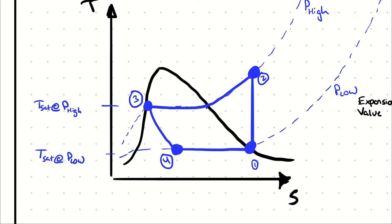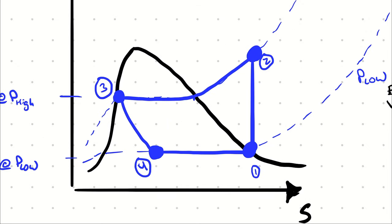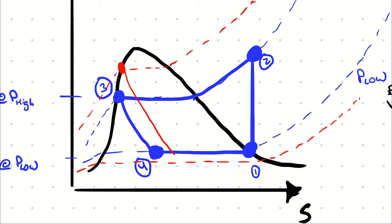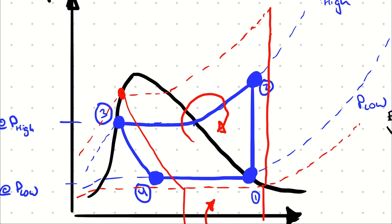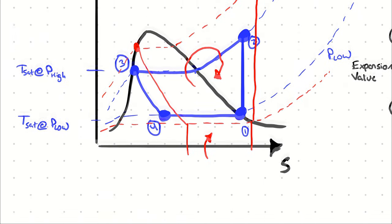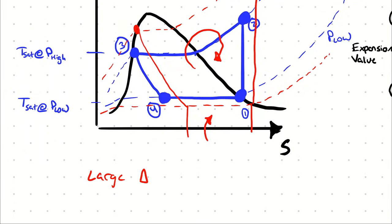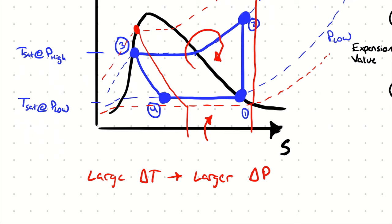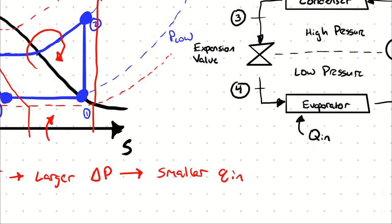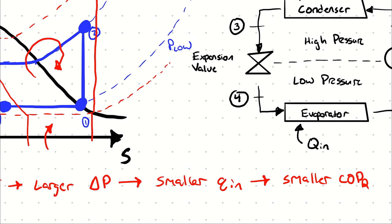Now let's look at how pressure difference affects operating efficiency. If I were to move the low pressure line down and/or move the high pressure line up, in both cases I'm going to be decreasing the difference in horizontal displacement between state four and state one. As a result of that smaller horizontal displacement, that means less heat removed from the refrigerated space. Even if I somehow didn't increase my net work, a smaller Q_in means a smaller coefficient of performance. Larger temperature difference implies larger pressure difference, which implies smaller Q_in, which implies smaller COP_R.